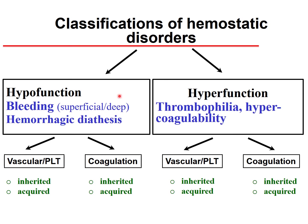The classification of hemostatic disorders has two major categories. One is hypofunction of the hemostatic processes, usually manifested as a bleeding tendency — either superficial or deep bleeding — called hemorrhagic diathesis. The other is hyperfunction of the hemostatic processes, called thrombophilia or hypercoagulability states.